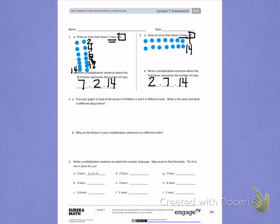Number 3. A. Turn your paper to look at the arrays in problems 1 and 2 in different ways. What is the same and what is different about them? So on your own,